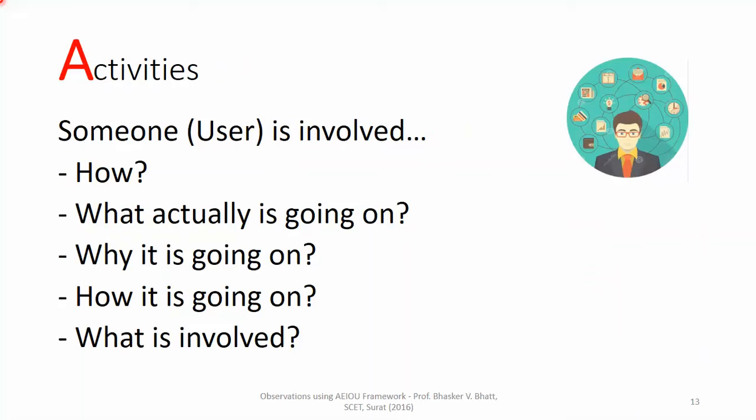While taking observations of activities for a given circumstance, we need to identify that the activity is being done by somebody. That person is considered to be the user. We need to observe how these activities are performed — describing or capturing a series of photographs step by step showing what activity is actually happening.